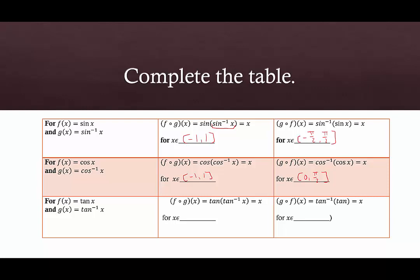And then for tangent, the domain for tangent inverse is from negative infinity to infinity. Meanwhile, the range for tangent inverse — which is the domain of tangent when considering its inverse — is between negative pi over 2 and pi over 2, but we don't include the pi over 2s because those were undefined.